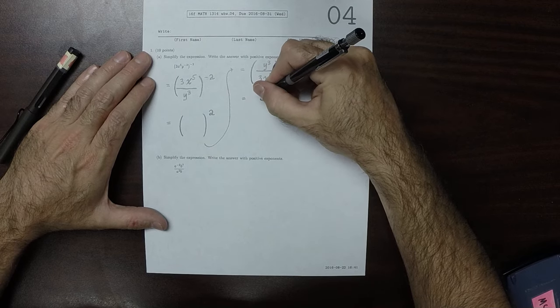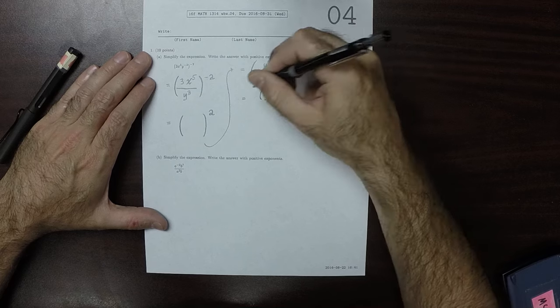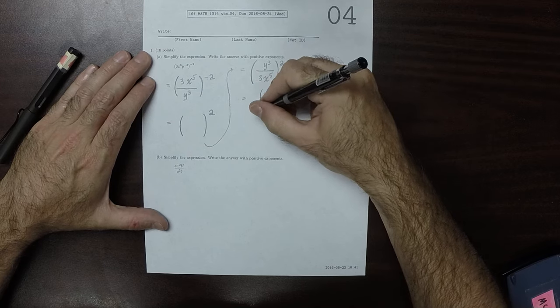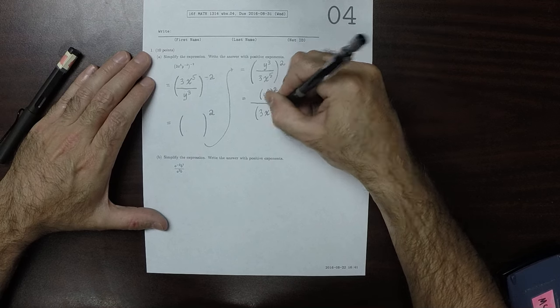So, that would be y cubed squared, and then divided by 3x to 5 squared.